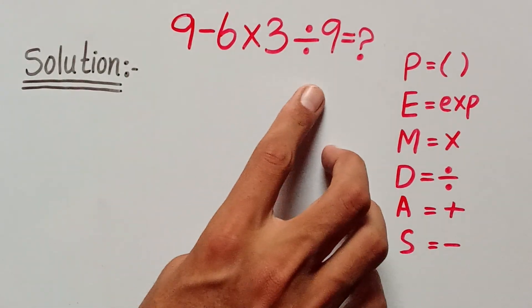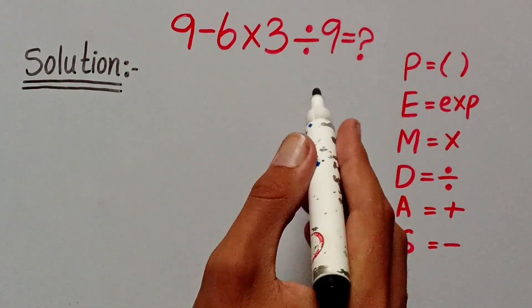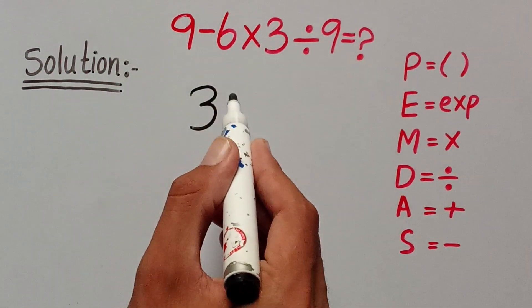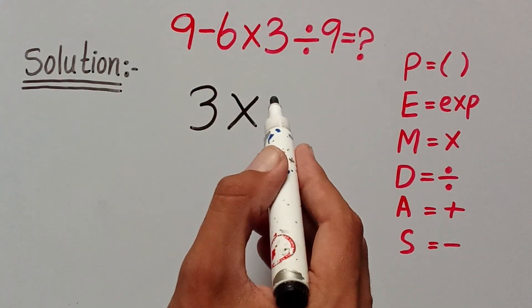Guys, most people can solve this question by the wrong method. They can write this question as 9 minus 6 equals 3, multiply by 3, divided by 9, equals 3.